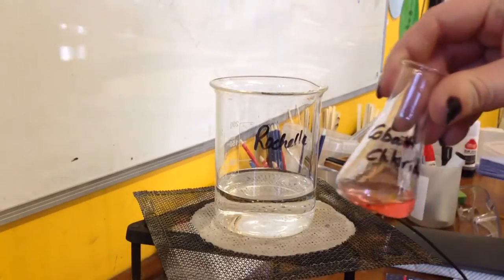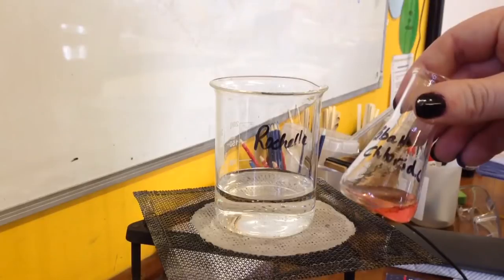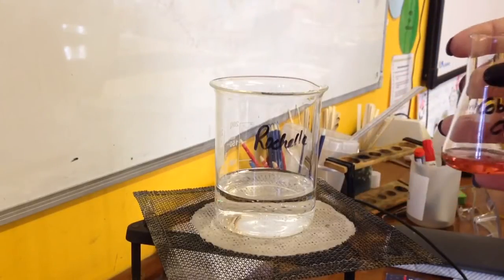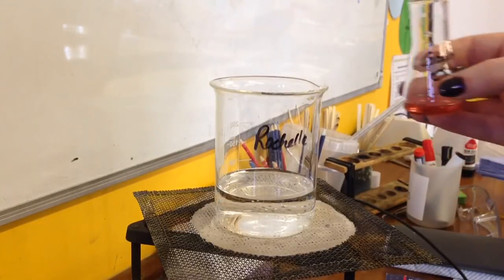This is our catalyst via cobalt chloride. You can see the cobalt chloride is a pink color and it's the color that I want you to pay attention to in this reaction.